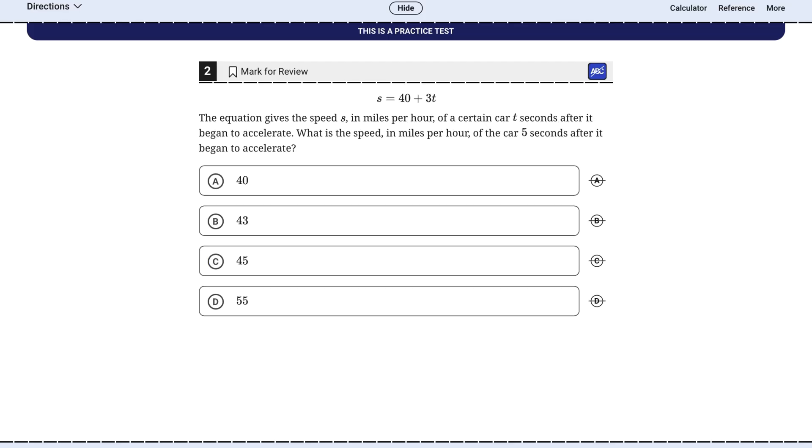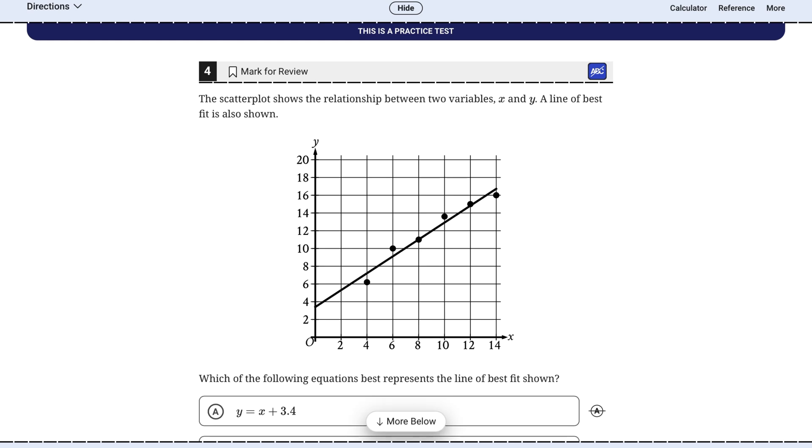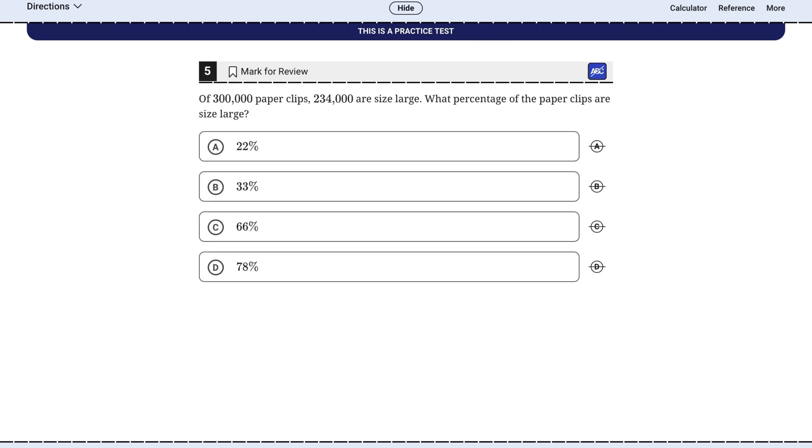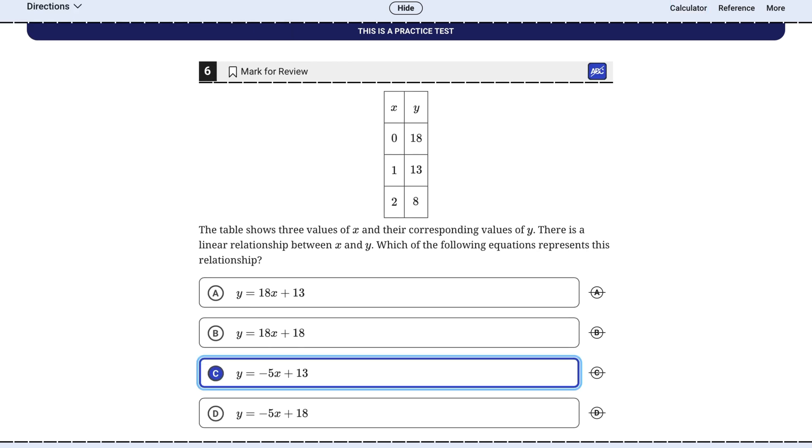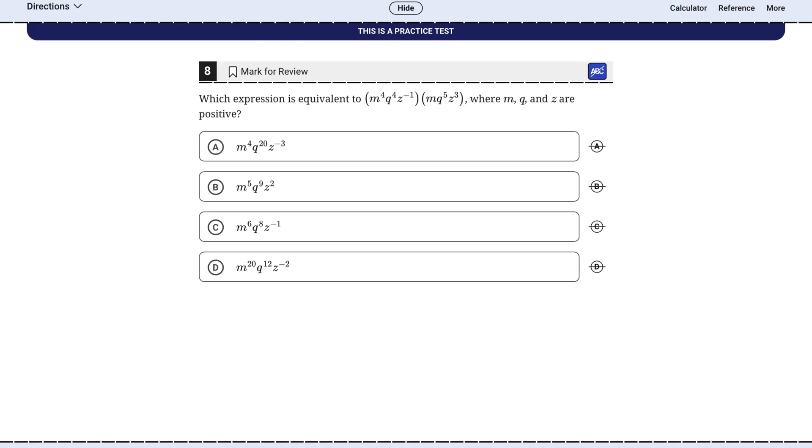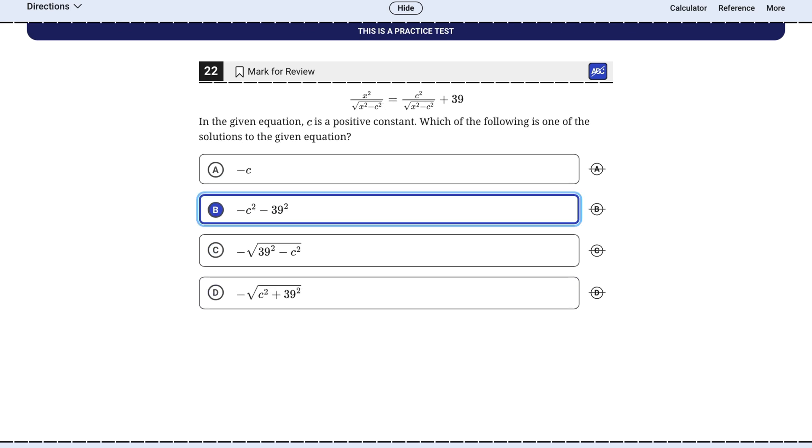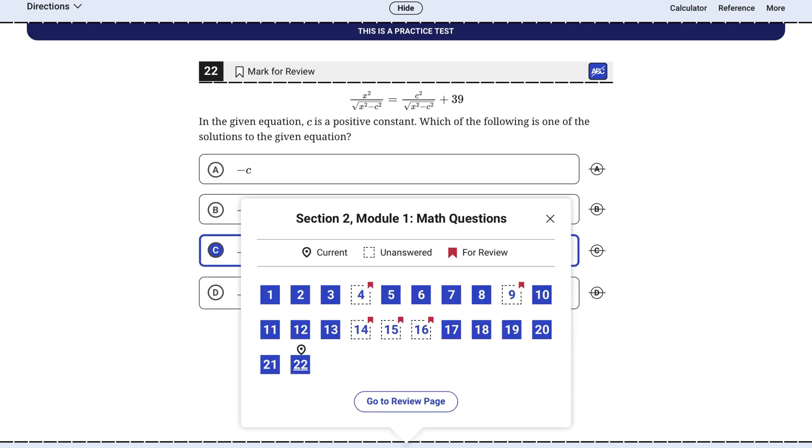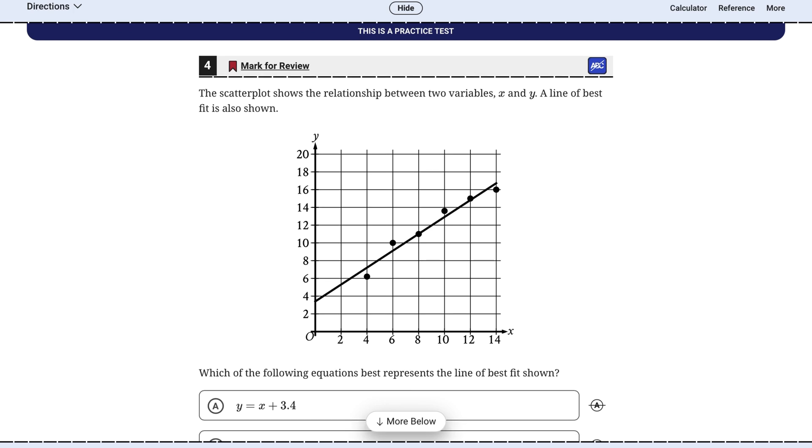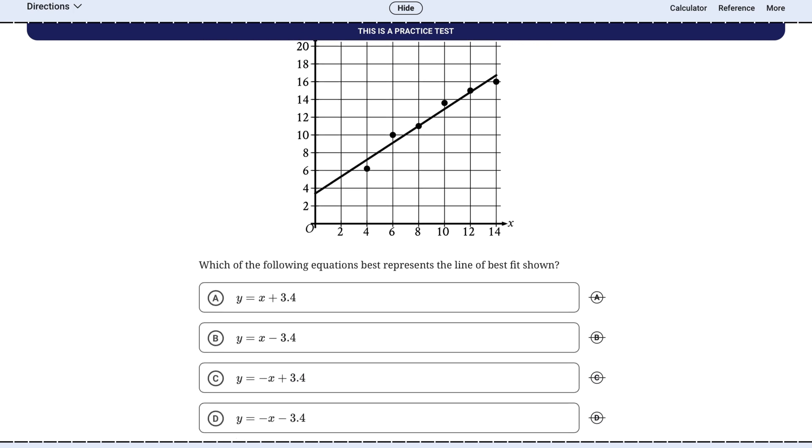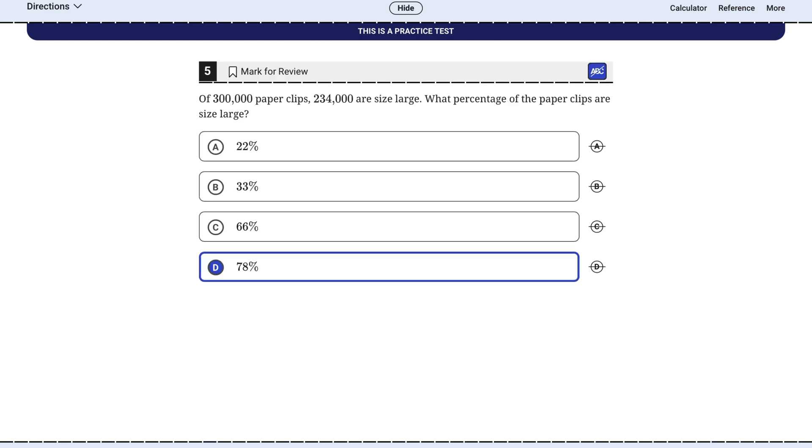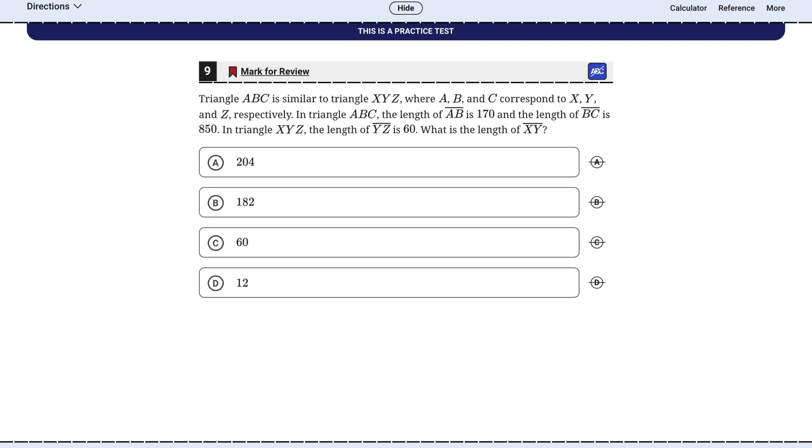Here's the strategy, the two-pass approach. On your first pass through the module, you only answer the questions you immediately know how to solve. If you read a question and have to think for more than 15 seconds about your first step, you flag it using the mark for review button and move on. Don't get bogged down. This does two things. First, you build momentum and confidence by banking all the easy points. Second, you ensure you see every single question in the module. After your first pass, you circle back to the flagged questions with the remaining time. Now you can tackle the tougher puzzles without the stress of the clock running out on questions you haven't even seen.